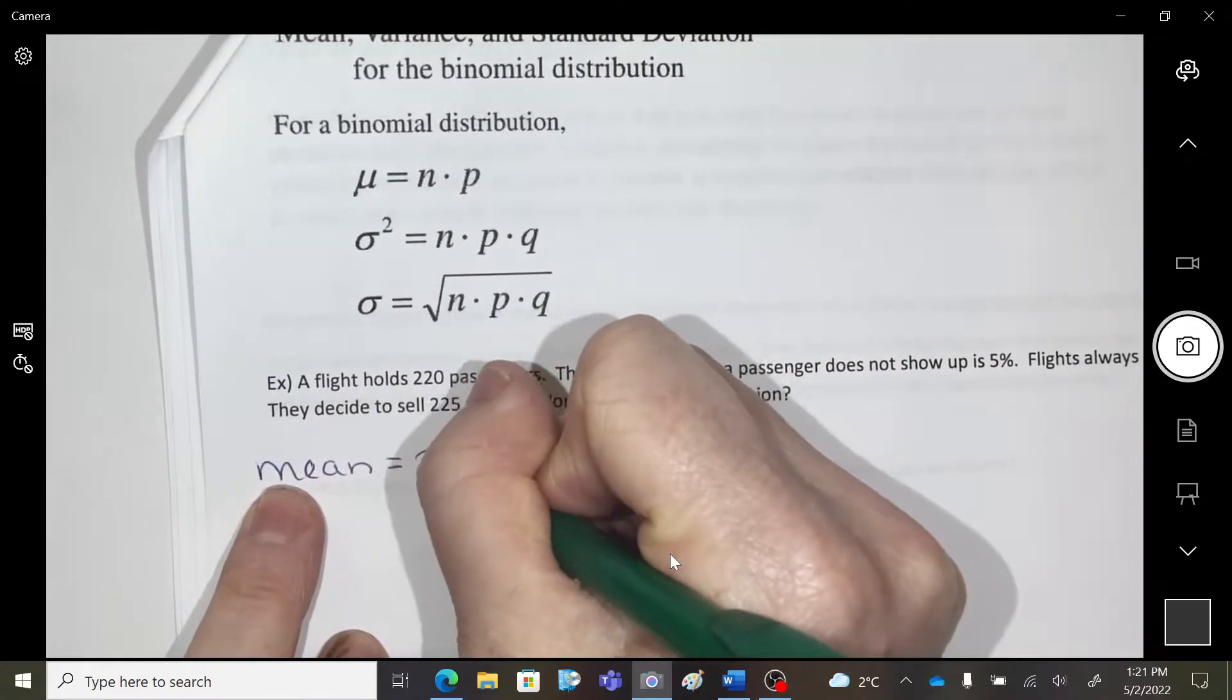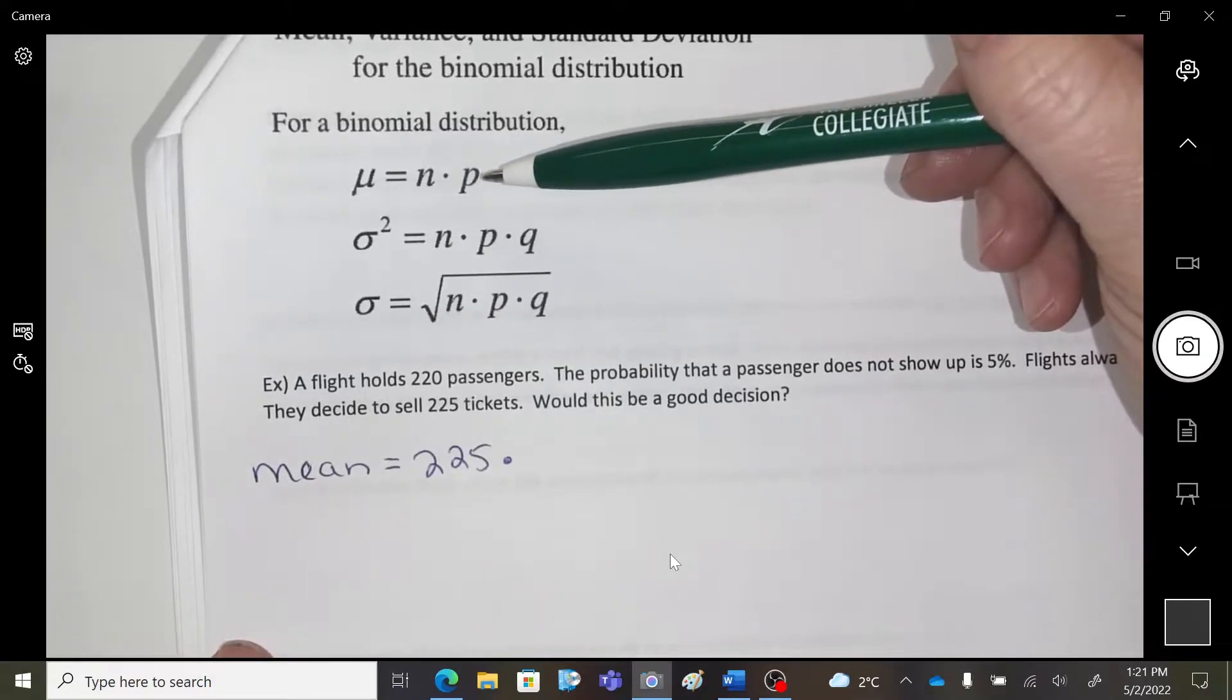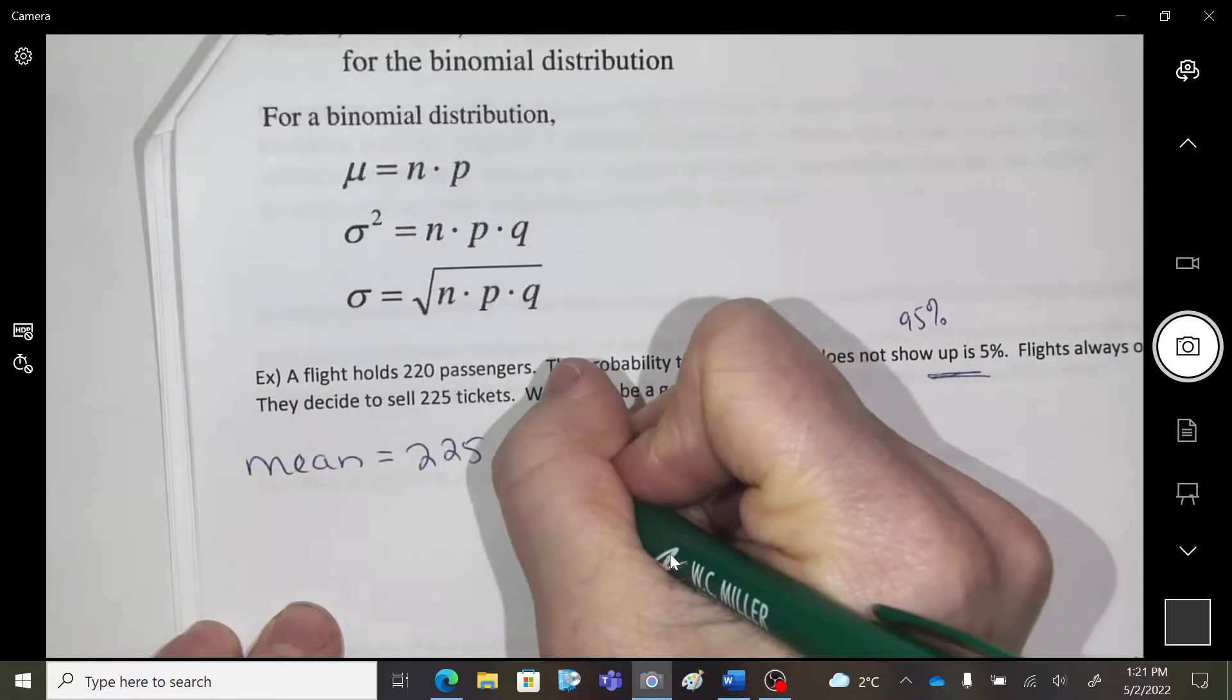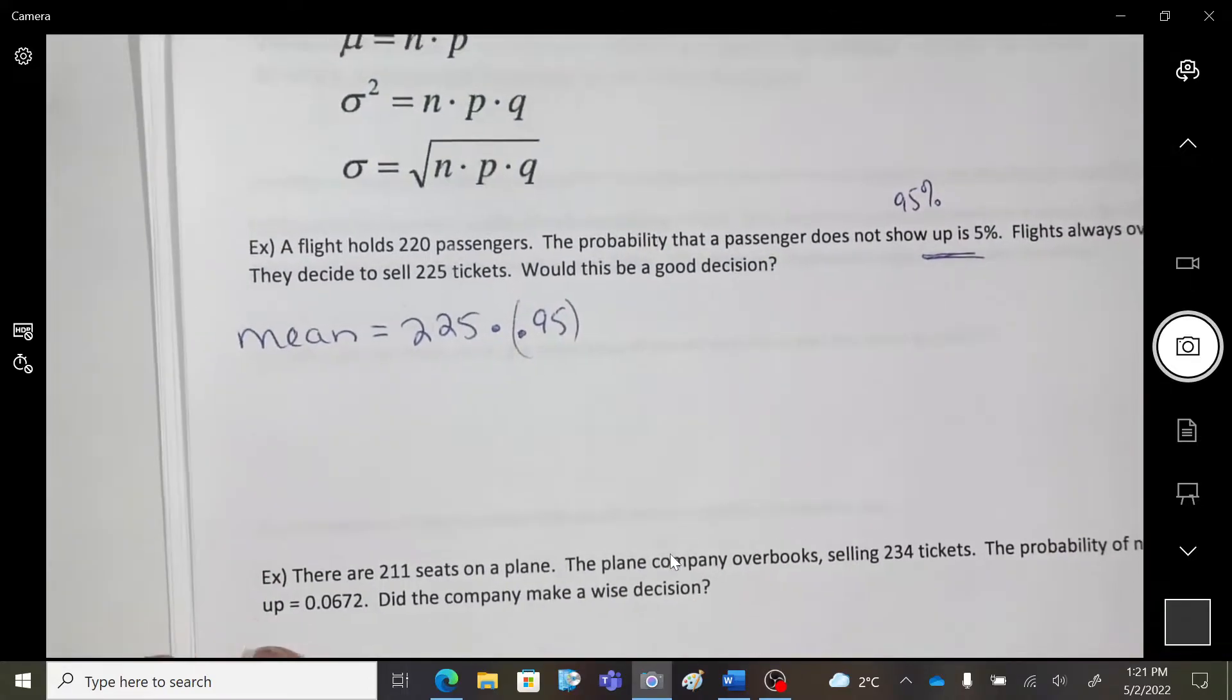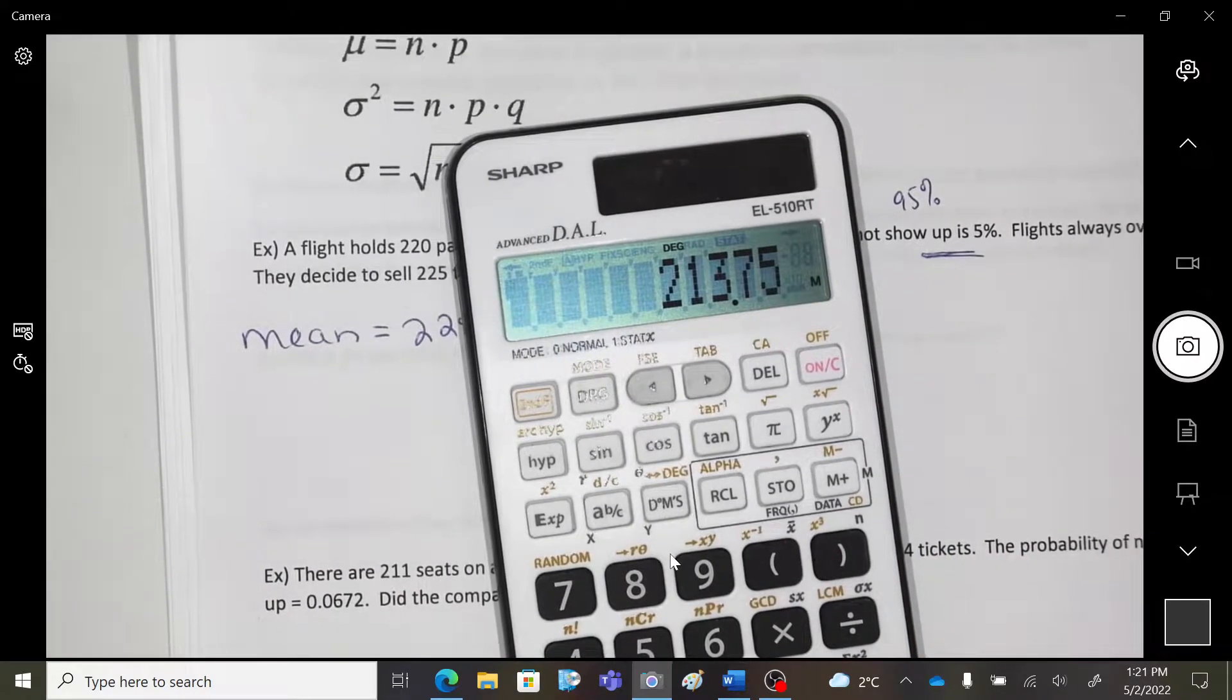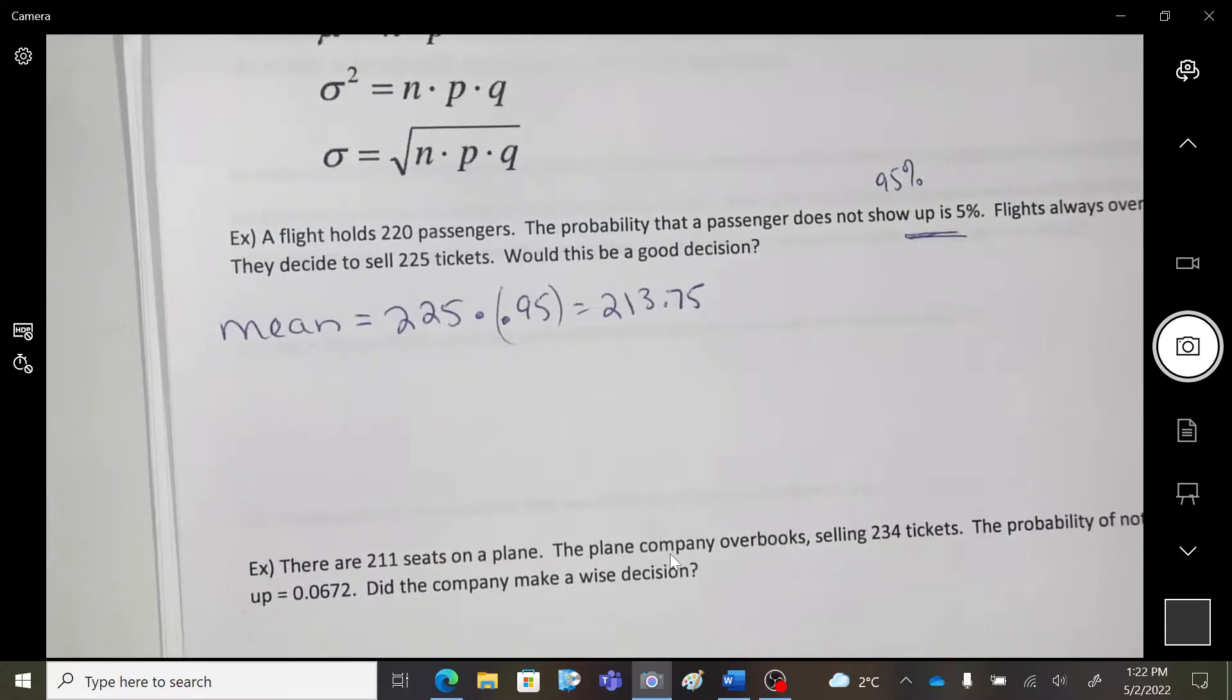We're selling 225 tickets. And we're expecting what percent of people to show up. This is not showing up. So 95% of people will show up. So I'm going to times that by 0.95. So this is my mean. That's how many I'm expecting.